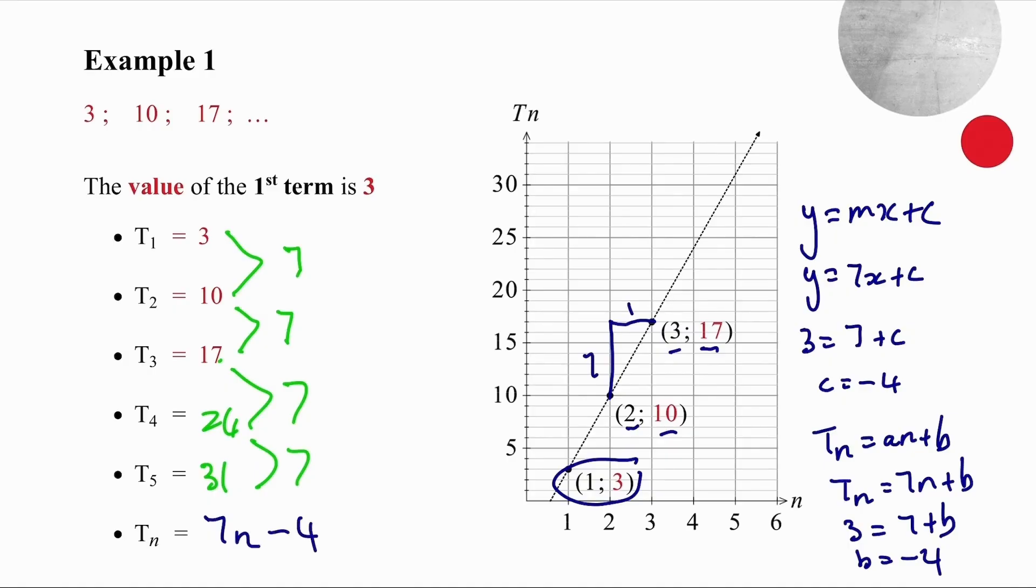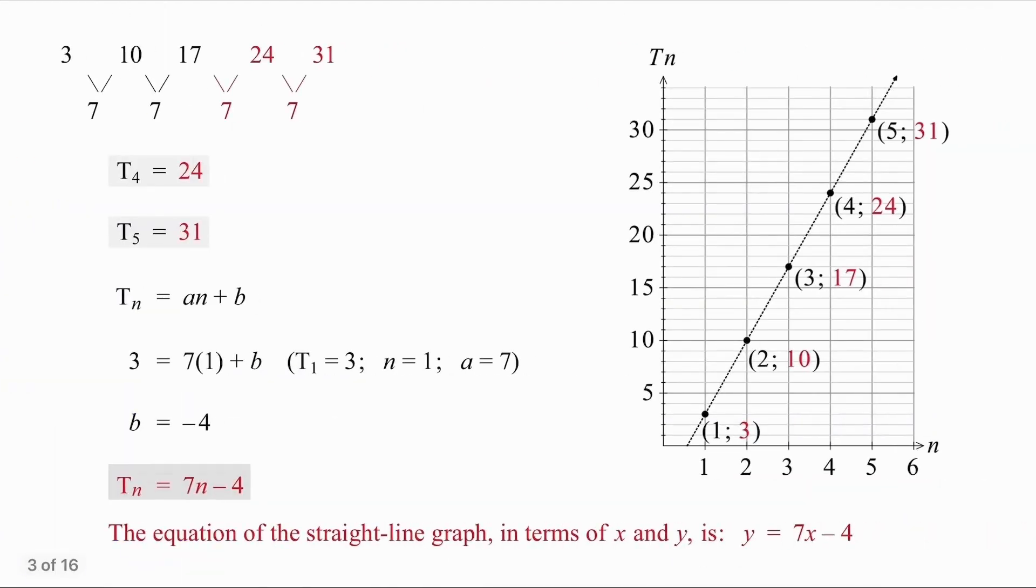We can easily find the minus 4 by inspection by simply saying when the answer needs to be 3, we need to substitute n equal to 1. And if we put 1 into here, we get 7, but we need 3, so we subtract 4. If you need to have another look at what I've just been through with you, pause the video, do this in your own time. And when you're ready, we'll do the next example together.